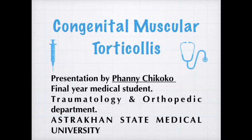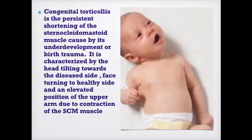Welcome to this tutorial from the Department of Pediatrics entitled congenital muscular torticollis. Congenital torticollis is the persistent shortening of the sternocleidomastoid muscle caused by its underdevelopment or birth trauma.